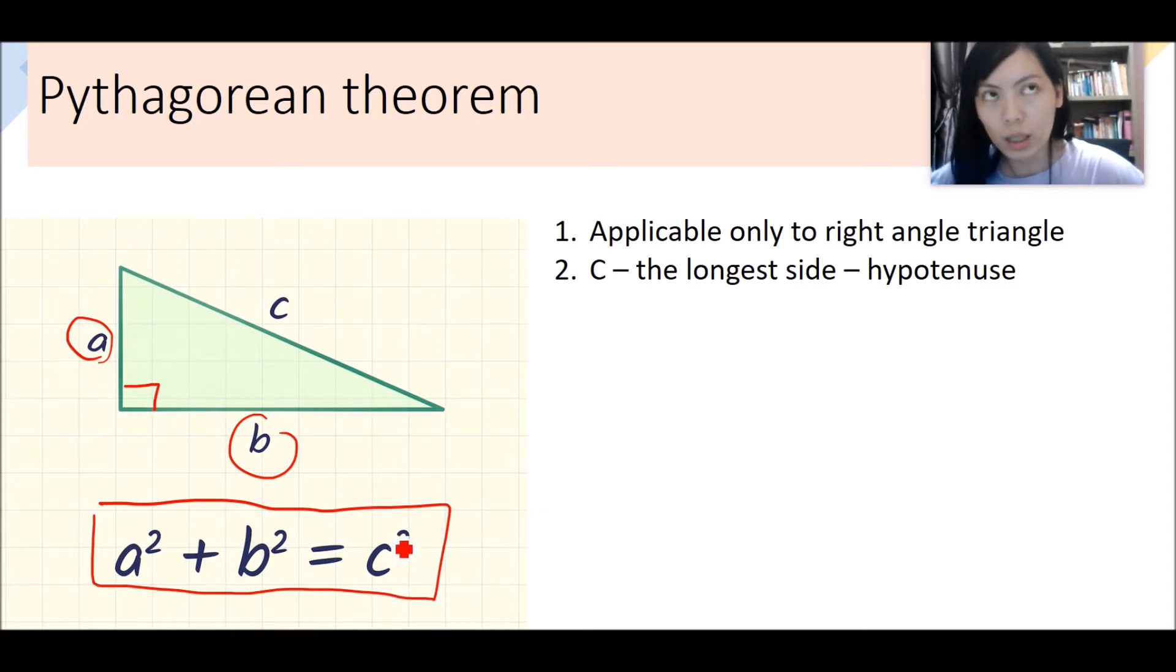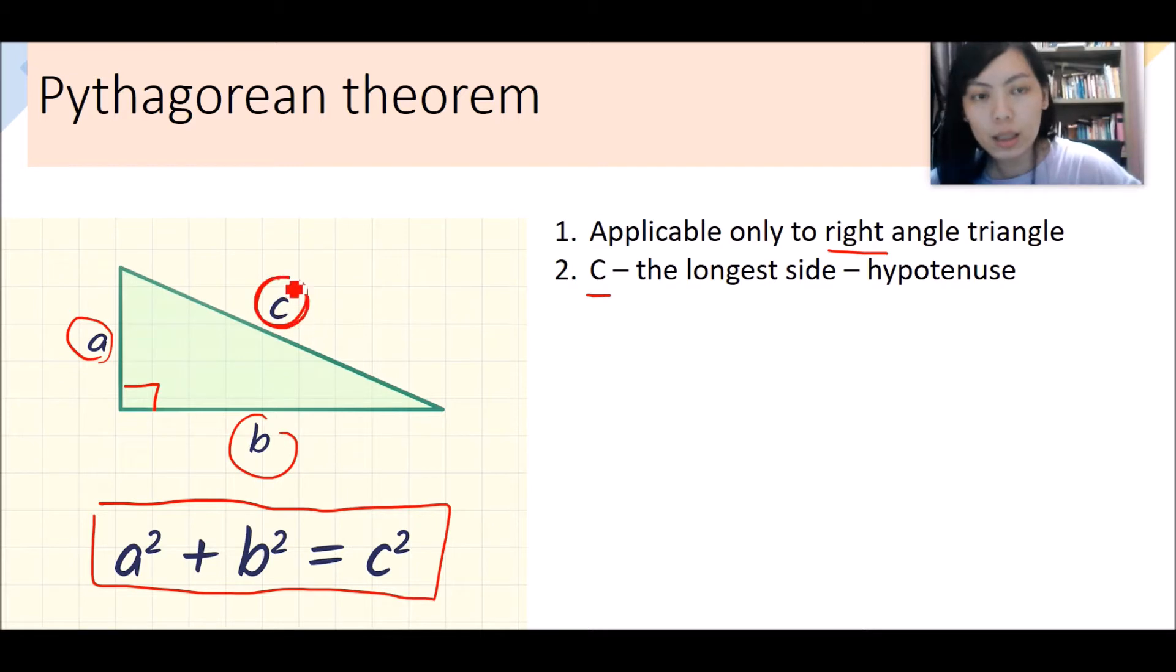So what are the things you need to take note when you apply this formula? There are two things. First, it's a right-angled triangle, and next, c is the longest side. We call it hypotenuse. This is the longest side.